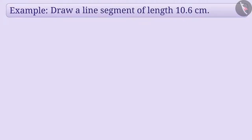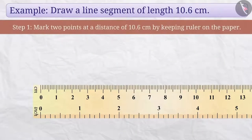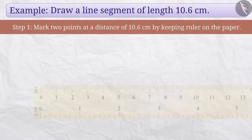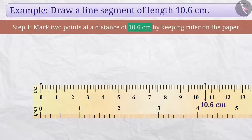Draw a line segment of length 10.6 cm. Let us first draw the line segment using a ruler. Step 1: We will place the ruler on the paper and mark two points covering the length of 10.6 cm. We have marked one point on 0 and the other point on the 10.6 cm mark of the ruler.